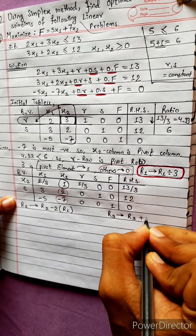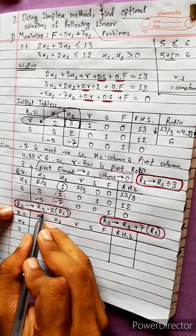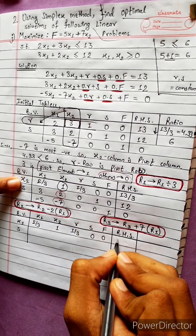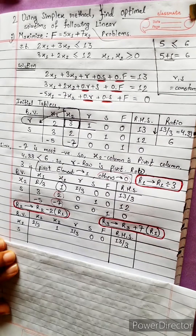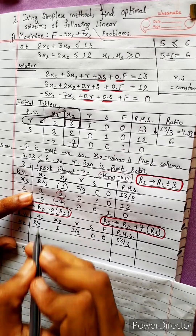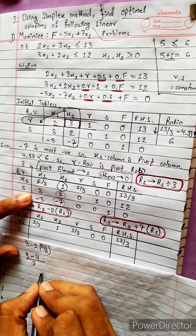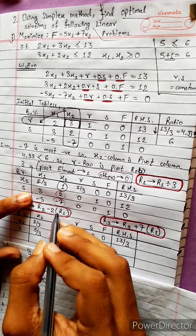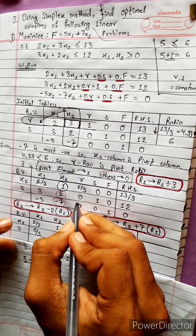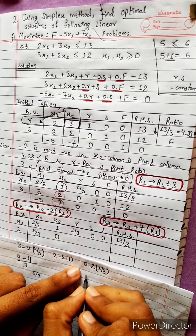For R1, we use the operation R1 divided by 3, giving values 1 by 3, 0, 0, 13 by 3. For R2, we perform R2 minus 2 times R1. R2 minus 2 times R1 gives 2 by 3. The LCM is 3: 3 minus 2 gives 1, so the result is 5 by 3.